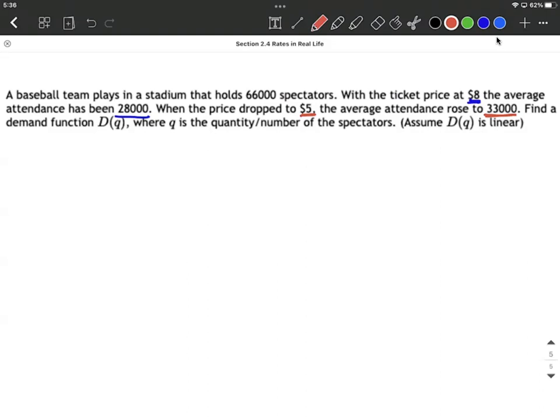So it's important to note demand functions always connect together price and quantity. But sometimes our input is going to be price, sometimes our input is going to be quantity. So in this case, we want to be careful that we're looking for D of Q. So what that tells us is Q is our input, and our price, P, is going to be the output.